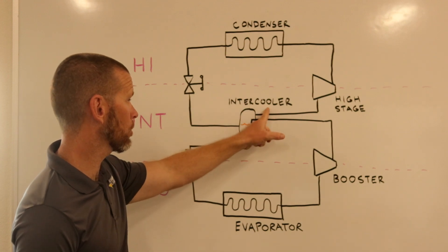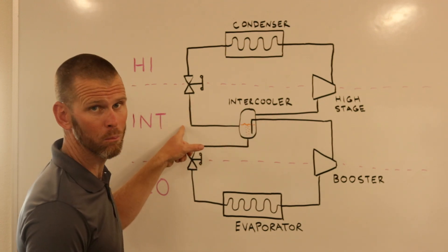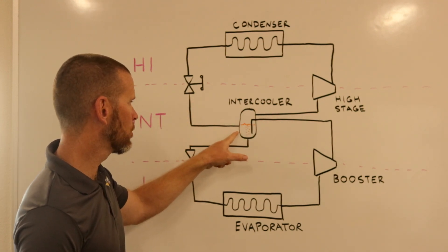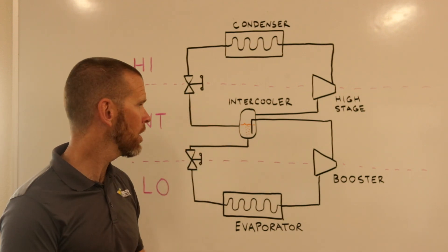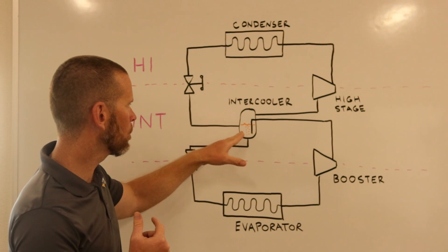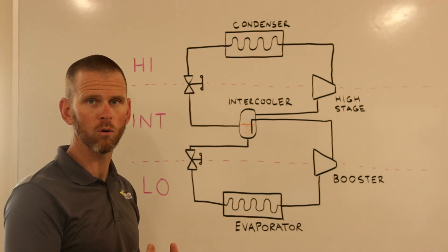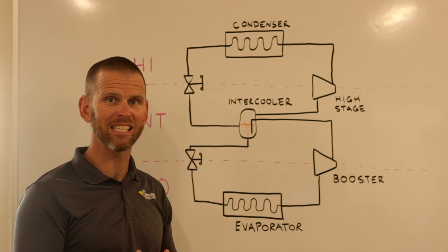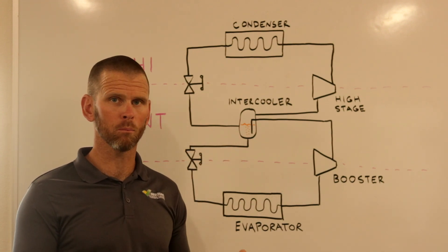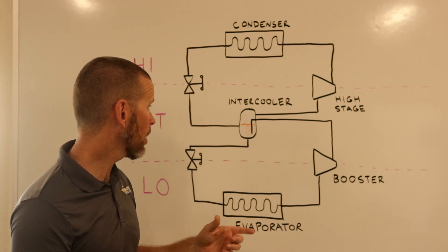We now have a lower-pressure liquid that enters our new component that's part of this two-stage system, and that is called an intercooler. This lower-pressure liquid enters the intercooler, and there would be some sort of solenoid valve that is interlocked with some sort of flow control or level control so that we maintain a level inside that intercooler of this lower-pressure liquid.